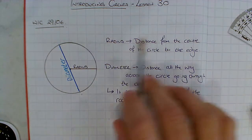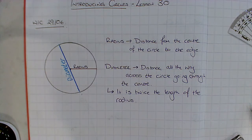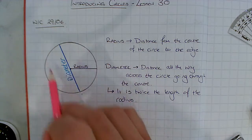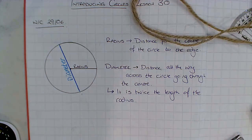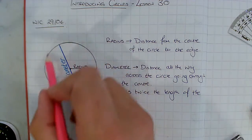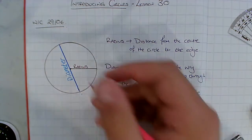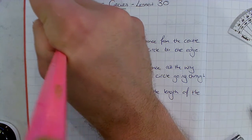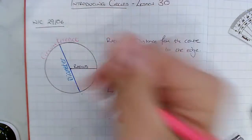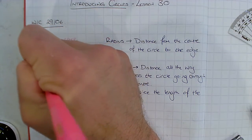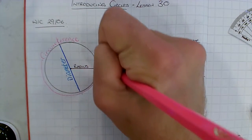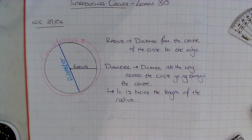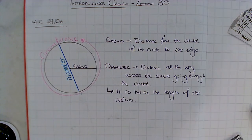This is all really useful information that you need to be getting down into your book. The very final bit is all the way around the outside — this is where you're going to need your piece of string. This distance all the way around the outside of my circle is known as the circumference, and we'll get to how we measure that with our piece of string a bit later on.